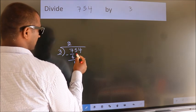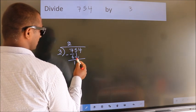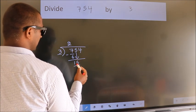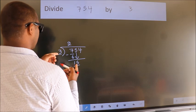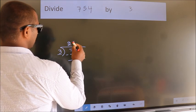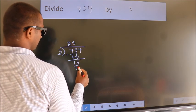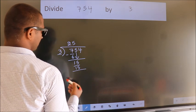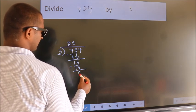After this, bring down the beside number. So 5 down. So 15. When do we get 15? In 3 table. 3 5s, 15. Now we subtract. We get 0.